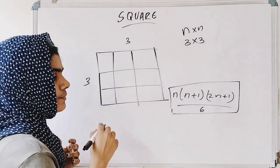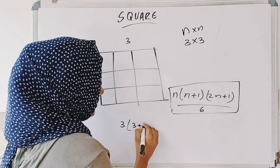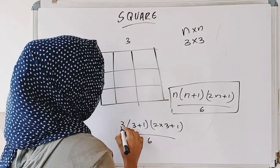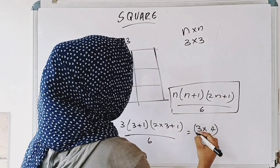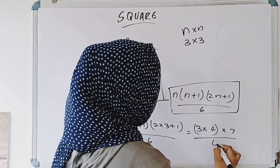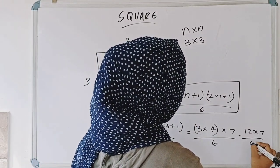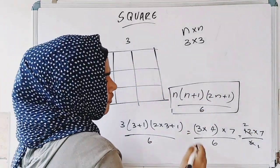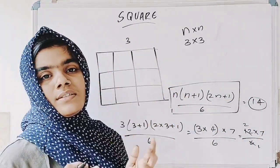Let's apply this: 3 into 3 plus 1 into 2 into 3 plus 1 divided by 6. That gives 3 into 4, which is 12. 2 into 3 is 6, plus 1 is 7, divided by 6. 12 into 7 divided by 6 gives 2, and 7 into 2 is 14. So we have 14 squares.